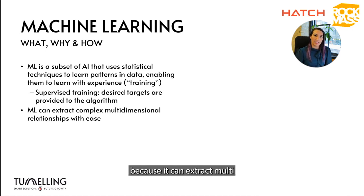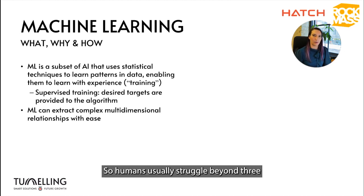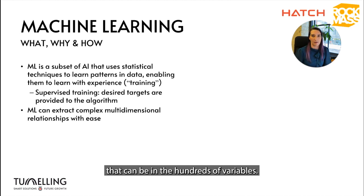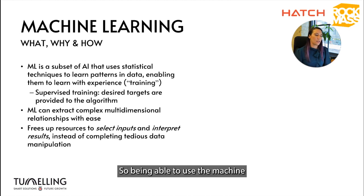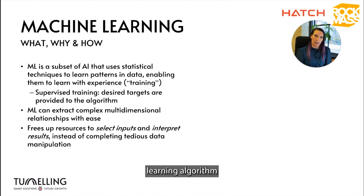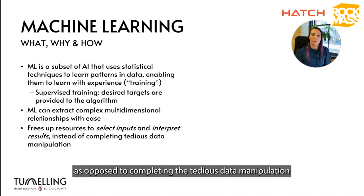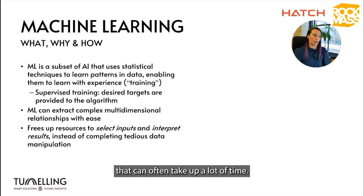Machine learning is also really powerful because it can extract multi-dimensional relationships between input data sets. Humans usually struggle beyond three or sometimes four dimensions, but machine learning can learn from multi-dimensional data sets with hundreds of variables. Using a machine learning algorithm to assist in engineering decision making frees up engineering resources to select inputs and interpret results, rather than completing tedious data manipulation.